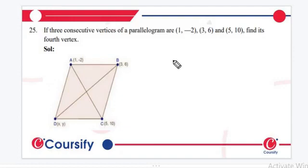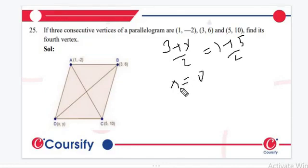Suppose the fourth vertex is x,y. So we can write (x+3)/2 must be equal to (1+5)/2. And after simplification, we can write x equals to 0.